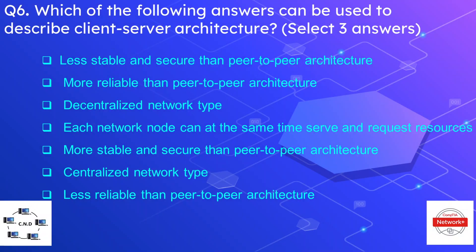Question number six: which of the following answers can be used to describe a client-server architecture? Select three answers. Options are: less stable and secure than peer-to-peer, more reliable than peer-to-peer, decentralized network type, each node can serve and request resources, more stable and secure than peer-to-peer, centralized network type, and less reliable than peer-to-peer. The correct three options are that it is more stable and secure.